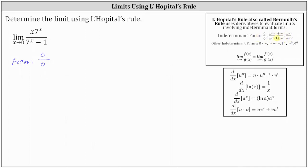L'Hôpital's rule states the limit as x approaches c of f of x divided by g of x equals the limit as x approaches c of f prime of x divided by g prime of x. So let's work on determining the derivatives of the numerator and denominator.